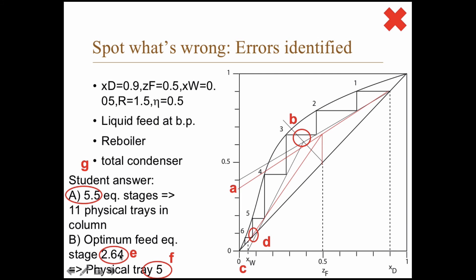And there is another problem here. 2.64. If you divide that with the overall tray efficiency 0.5, you get more than 5. Then you should round that up to the nearest integer, and that would be 6, not 5.